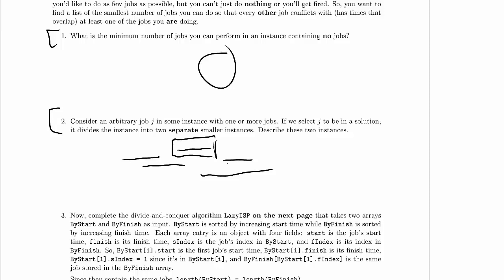And it's going to divide up the instance into two separate smaller instances. So why does it divide the instance into two separate instances? Clearly, you can't use any of the jobs that conflict with that job, so we get to eliminate this one and this one just because they conflict. But that's nothing special. I mean, that's just removed some jobs from the instance.